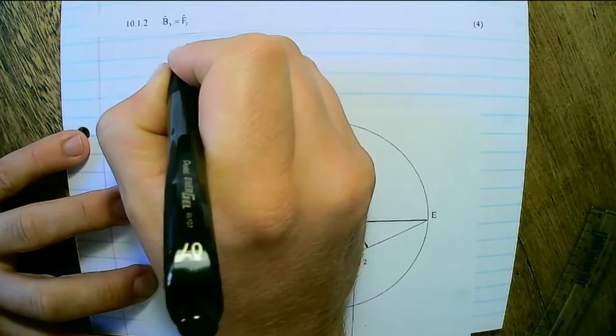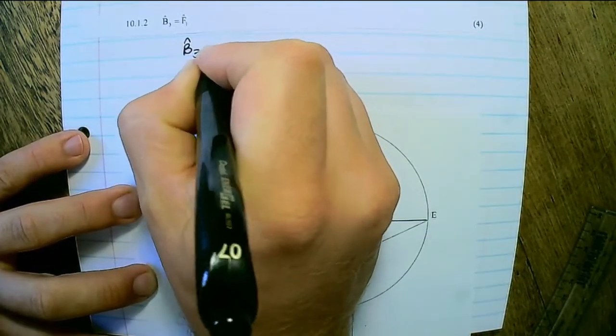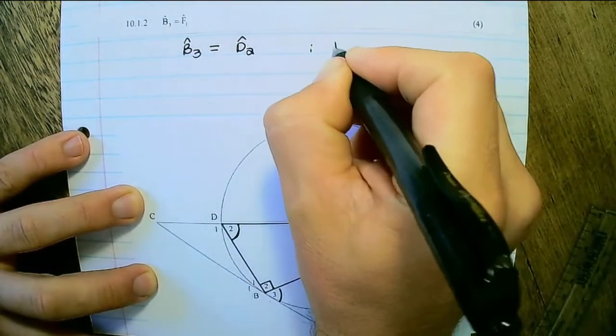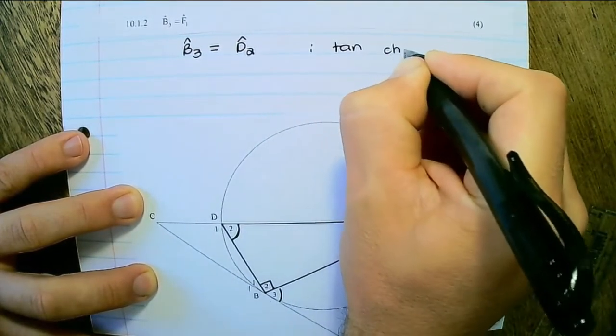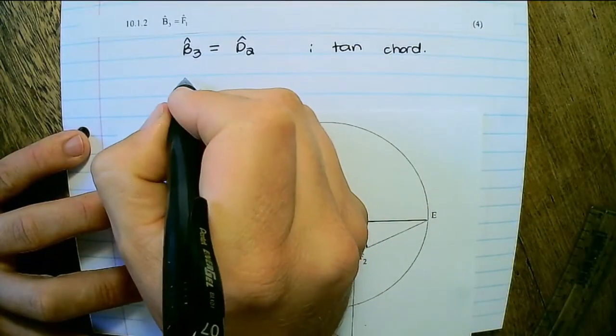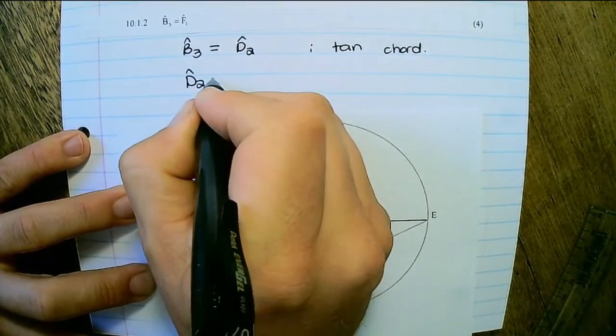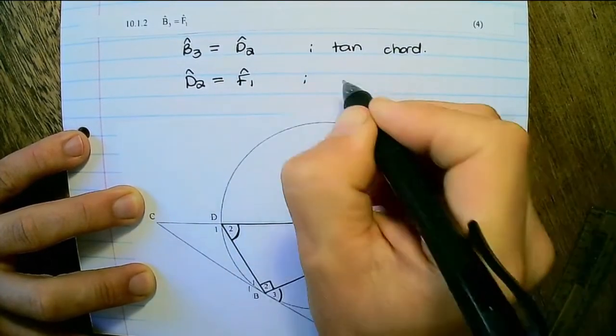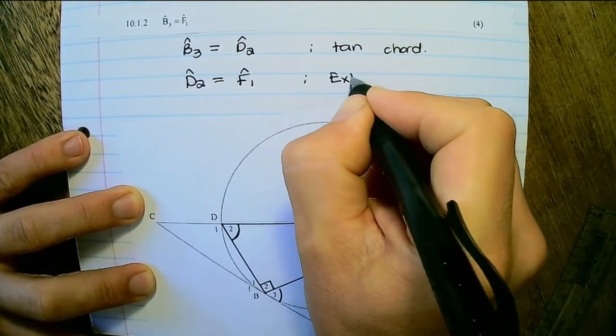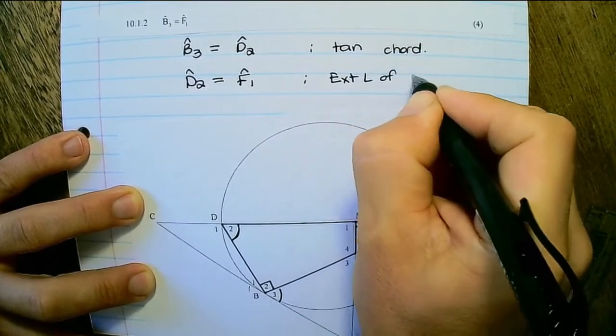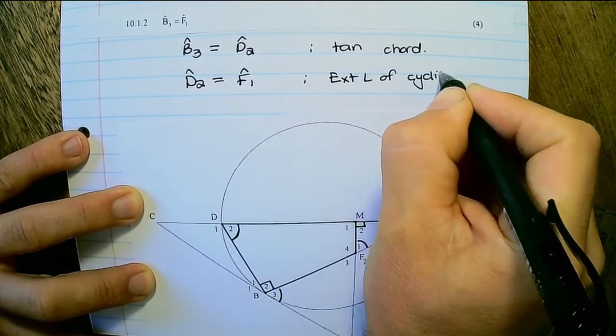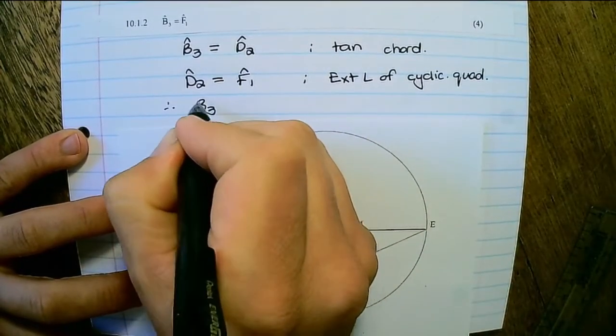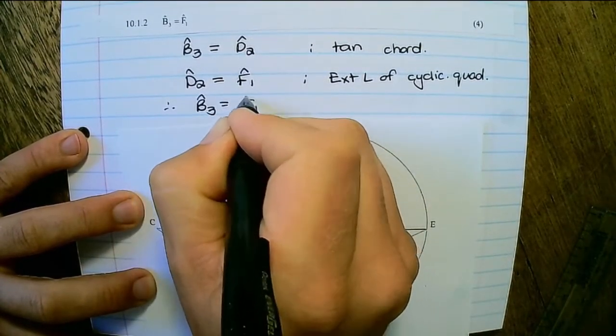So I would write it as B3 is equal to angle D2, tan-chord. Then I would say angle D2 is equal to F1, and the reason is exterior angle of a cyclic quad. Therefore B3 is equal to angle F1.